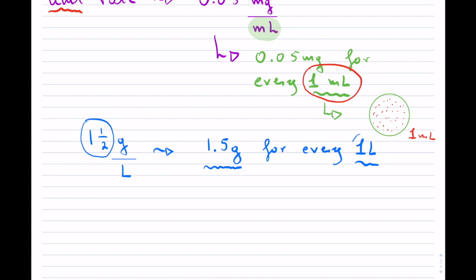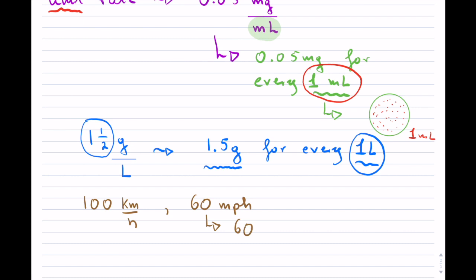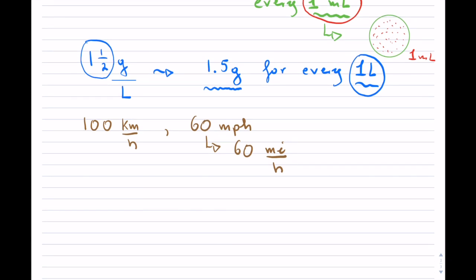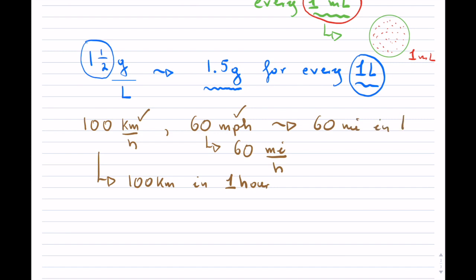Unit rates don't just exist in health — there are many instances in everyday life. For example, if you're driving, you might have 100 kilometers per hour or 60 miles per hour. That simply means 60 miles for every one hour. In the United States you use miles per hour, in Canada you use kilometers per hour. These are called unit rates because they tell us we travel a set distance in one unit of time.